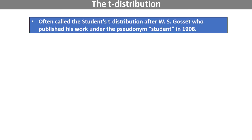The t-distribution is often called the Student's t-distribution and is named after its creator, W.S. Gossett, who published his work anonymously under the pseudonym Student in 1908.